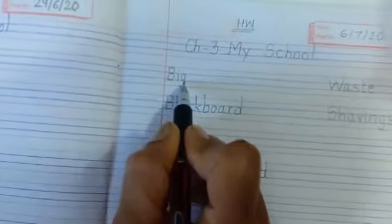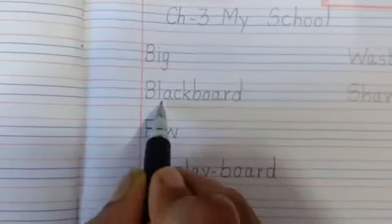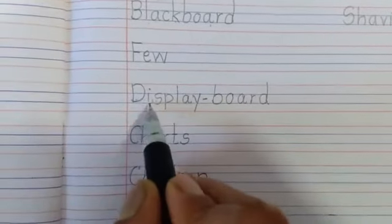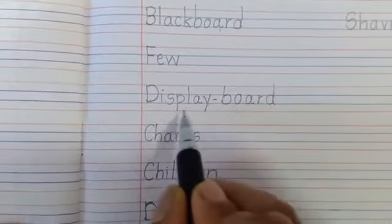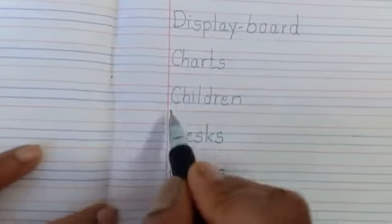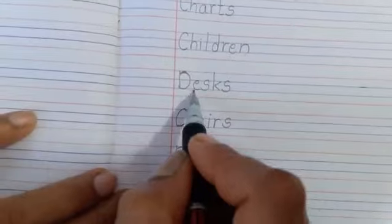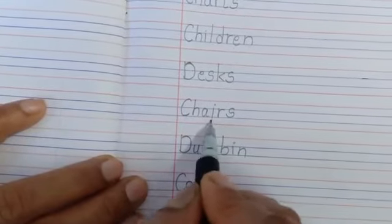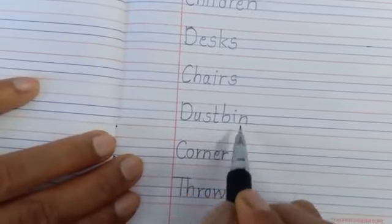New words: B-I-G — Big. B-L-A-C-K — Black. B-O-A-R-D — Board. Blackboard. F-E-W — Few. D-I-S-P-L-A-Y — Display. B-O-A-R-D — Board. Display Board. C-H-A-R-T-S — Charts. C-H-I-L-D-R-E-N — Children. D-E-S-K-S — Desks. D-U-S-T-B-I-N — Dustbin.